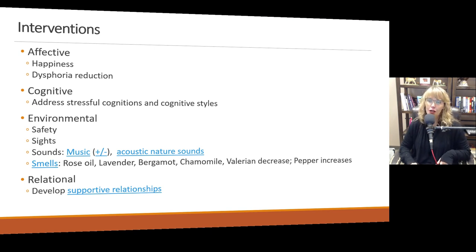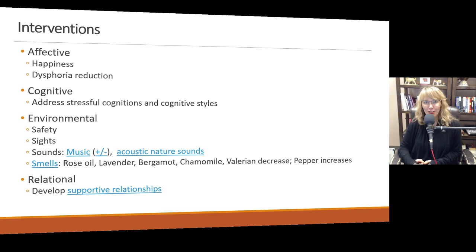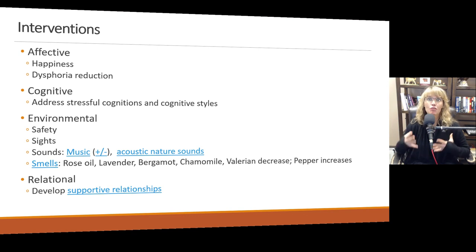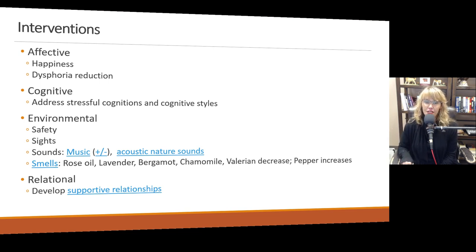Rose oil, lavender, bergamot, chamomile, and valerian have all been shown to decrease adrenaline levels in people — and that's just by inhaling them. Inhaling those essential oils is associated with significant reductions in stress hormones. Black pepper increases levels of adrenaline. It's important to have people talk with their doctor about the causes of their low adrenaline levels. If it's due to HPA axis dysfunction, then pepper may not help them feel energized because their synapses are just not responsive to the adrenaline anymore. But for people who have a functioning HPA axis and are just feeling kind of sluggish, essential oil of black pepper has been shown to help people feel more energized and increase adrenaline levels.